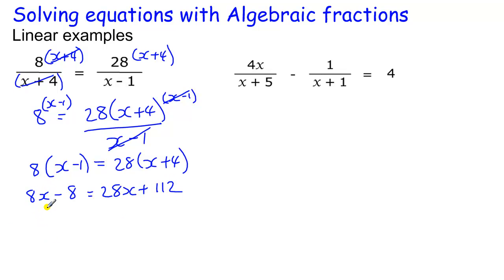If I subtract 8 from both sides, I end up with 20x here. So minus 8 equals 20x plus 112. Take away 112 from both sides, I get minus 120 equals 20x. So divide by 20, I get x equals minus 6.